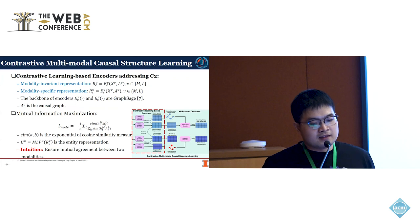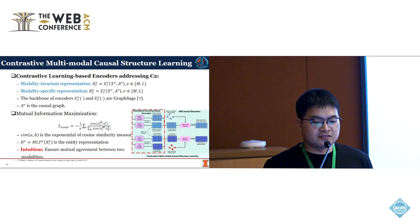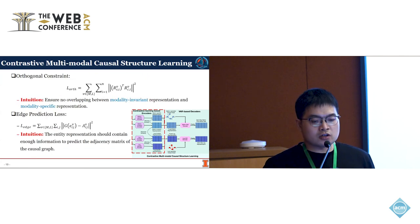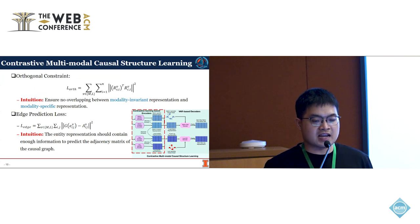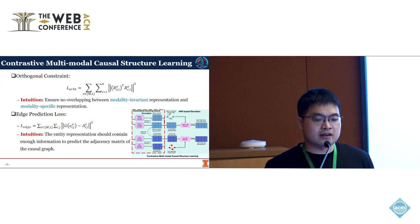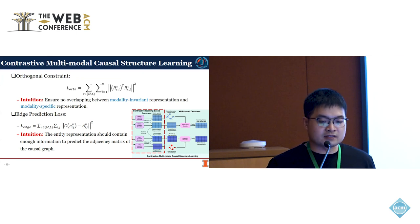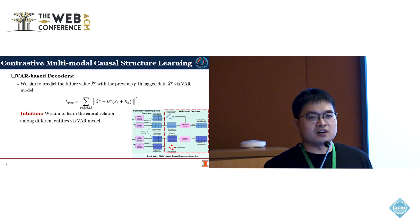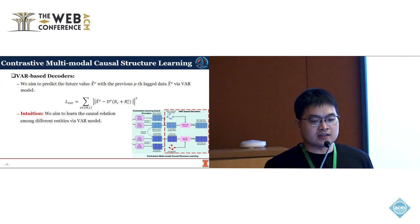The backbone of the encoder is a graph structure. We utilize mutual information maximization to ensure mutual agreement between the two modalities. The orthogonal constraint is introduced to ensure there is no information overlap between the modality-invariant and modality-specific representations. In addition, we introduce an edge prediction loss, inspired by the fact that learned features should be able to predict the existence of edges in the causal graph. The decoder of the contrastive multi-modal causal structure learning module is a VAR-based model, which predicts future values based on historical data and learns the causal relations among different entities.